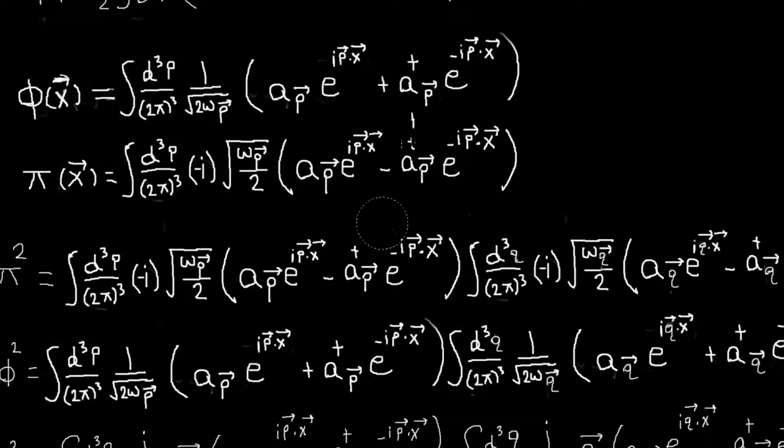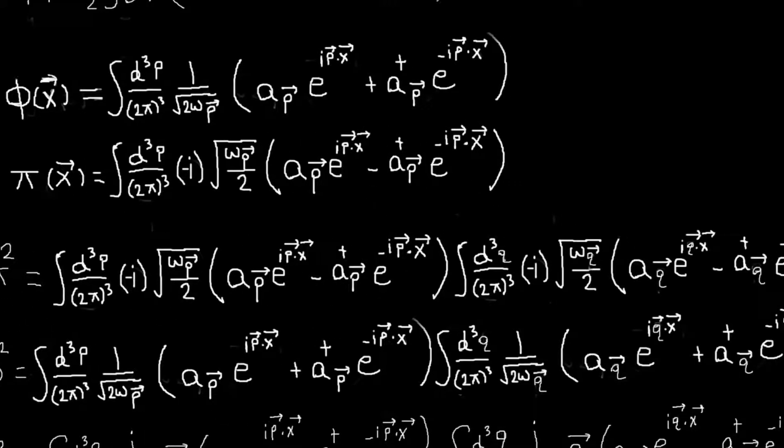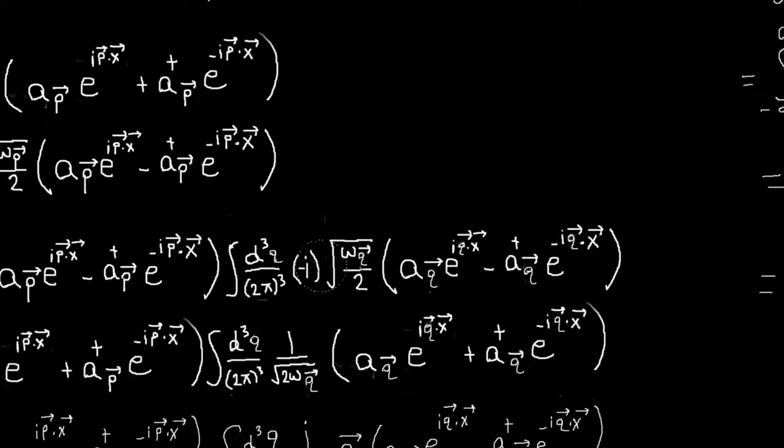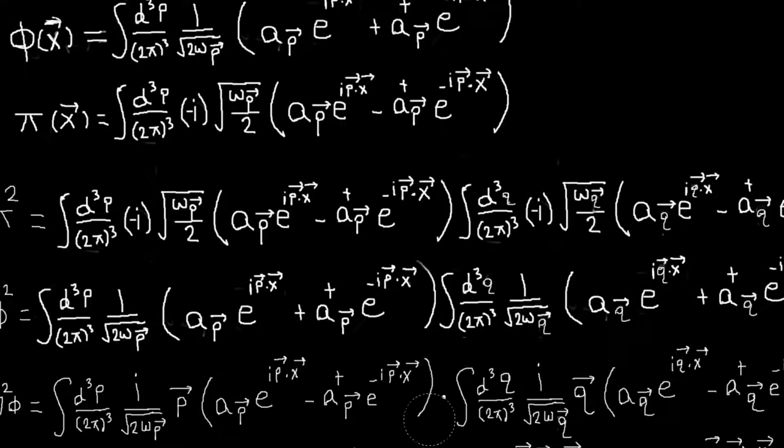So we don't want to repeat them. So I basically, in my pi here, I have just this expression here with p, but then when I multiply, I multiply by the same thing, but this time I'm integrating over q. And I do that with all three of these terms.